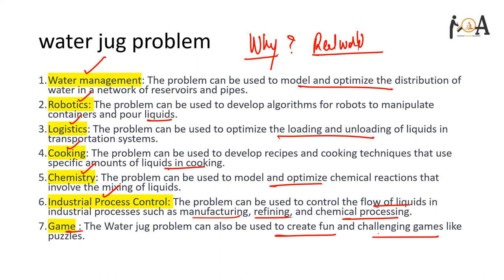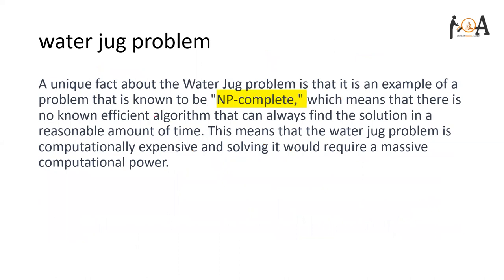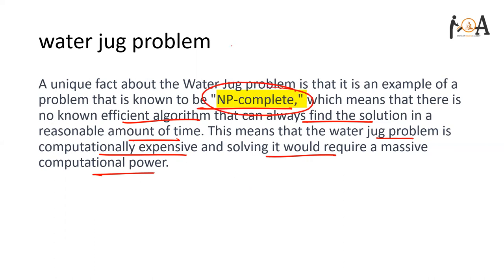Before learning this problem you must know what it will get us in future and where its real-time applications are. One unique fact about the water jug problem is that it is an example of an NP-complete problem, which means there is no known efficient algorithm that can always find the solution in a reasonable amount of time. The water jug problem is computationally expensive and solving it would require massive computational power.